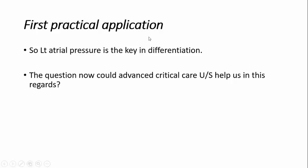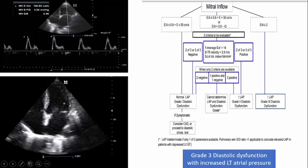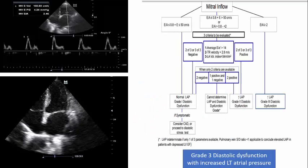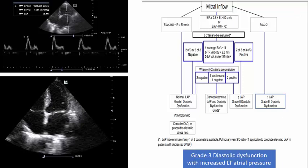The first practical application of diastolic dysfunction assessment in ICU: left atrial pressure is the key in differentiation between cardiogenic and non-cardiogenic according to the Berlin criteria. Could advanced critical ultrasound help us in this regard? We go to the great 2016 recommendation for evaluation of left ventricular diastolic dysfunction by echocardiography from the American Society of Echocardiography and the European Association of Cardiovascular Imaging. These guidelines are very easy and very important to apply in ICU.